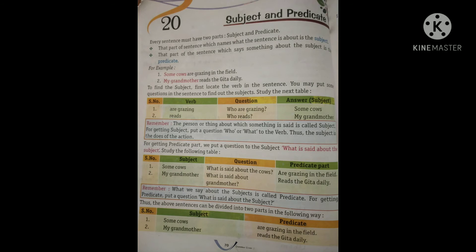Same way, my grandmother subject hai. Toh question uska kya banega, what is said about grandmother? Grandmother ke baare mein kya bataya gaya hai? Yeh bataya gaya hai ke reads the Gita daily, woh roz padhti hai Gita. Toh woh hua hamara predicate.